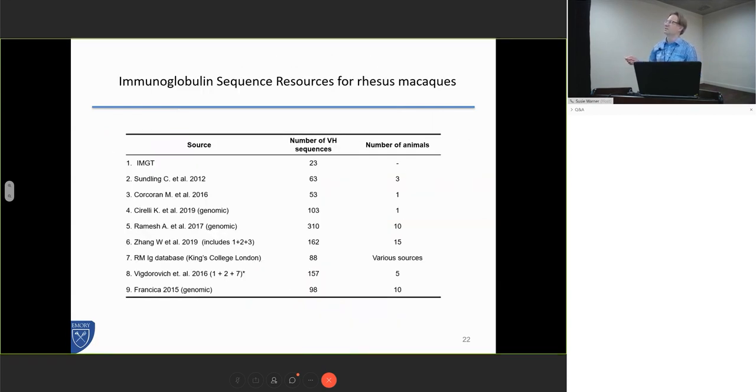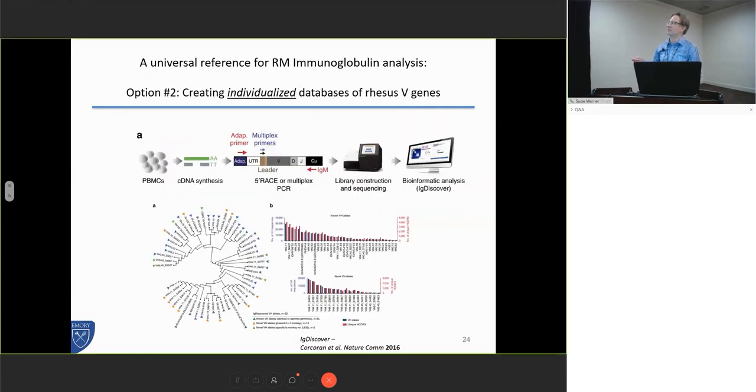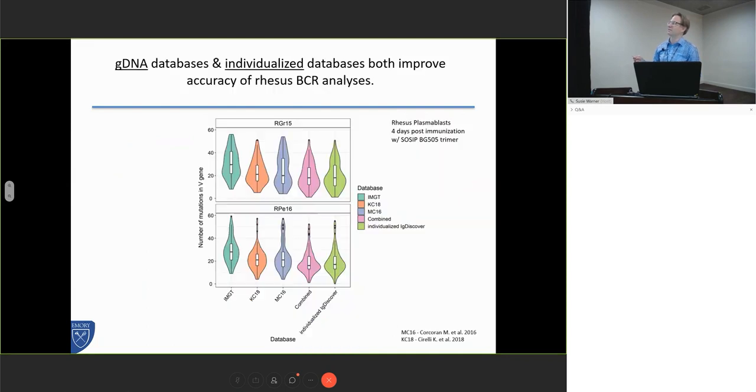These are some of the various references that are out there that have attempted to collect immunoglobulin sequences. We've built our own in-house database, and we've also used inference informatics to try and get novel alleles. To test which is the better method, we started doing repertoire sequencing and counting the number of inferred mutations. We did this by making an inferred germline database of individual animals and also using our combined database and a number of other databases including IMGT.